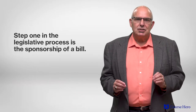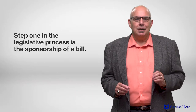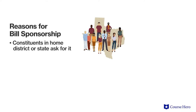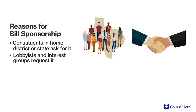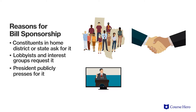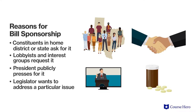The first step in the legislative process is sponsorship of the bill. A representative or senator, or a group of representatives or senators, may sponsor a bill for many reasons. Constituents in the legislator's home district or state may ask for specific legislation, or lobbyists working for interest groups may have requested the bill. The president may have publicly pressed for the bill, which a congressional ally would then introduce, or a legislator may initiate a bill on his or her own accord in order to address an issue important to that member or to a particular constituency.